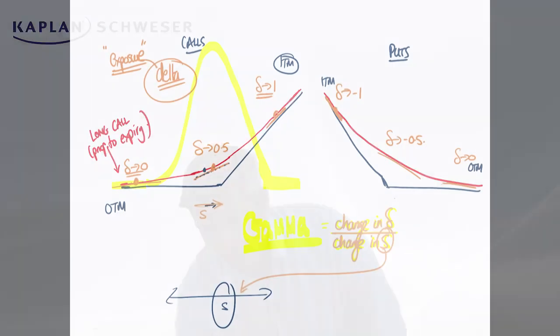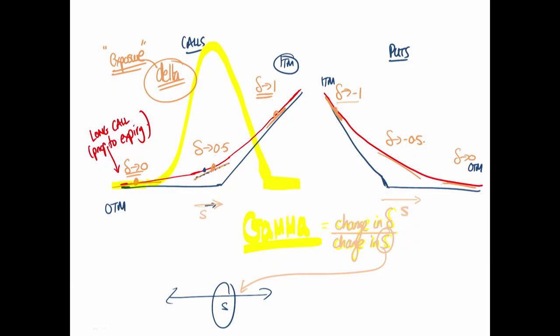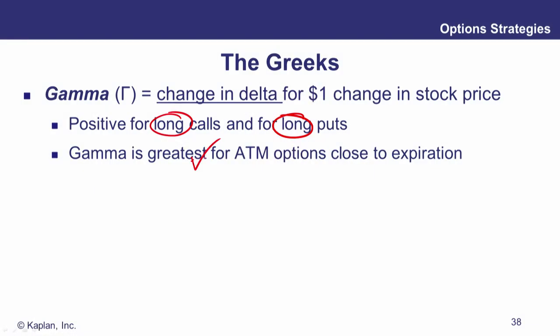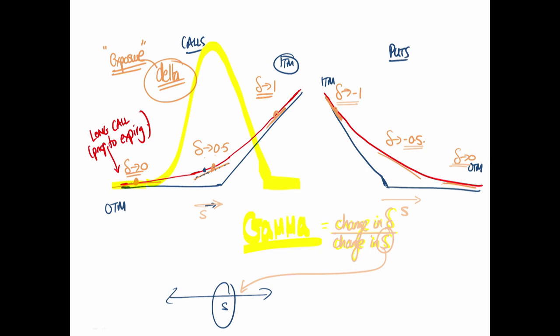Long options have positive gamma; short options have negative gamma. Gamma is greatest for at-the-money options — that's why the yellow bell curve is peaked in the middle, where curvature is greatest and the corners are sharpest.